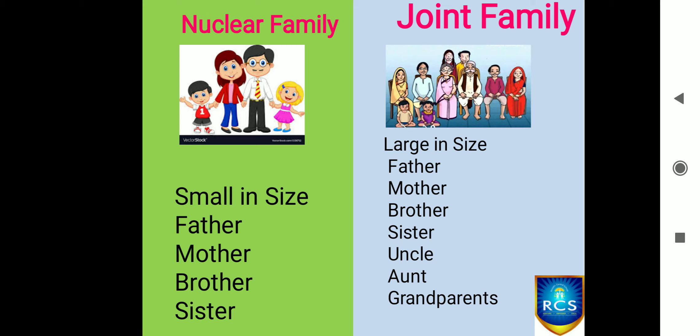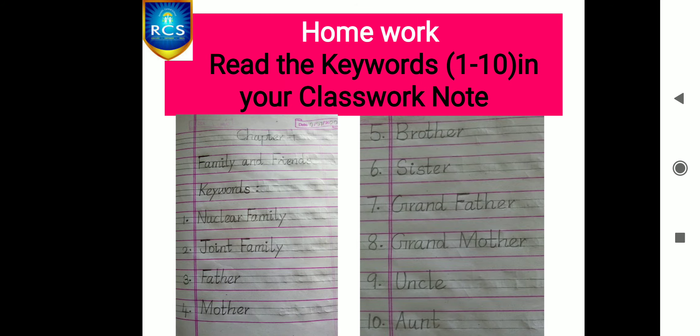Children, now it is time for homework. Read Chapter 1 keywords 1 to 10 in your classwork note. The keywords are: nuclear family, joint family, father, mother, brother, grandfather, grandmother, uncle, and aunt.